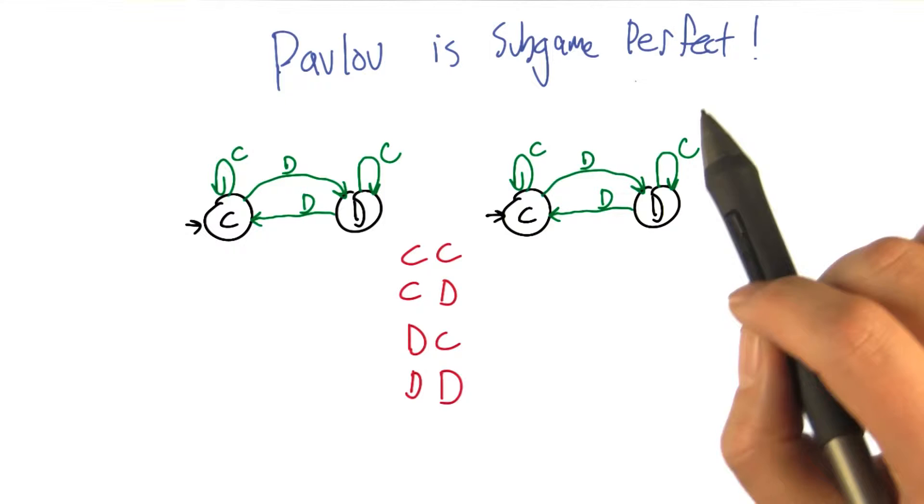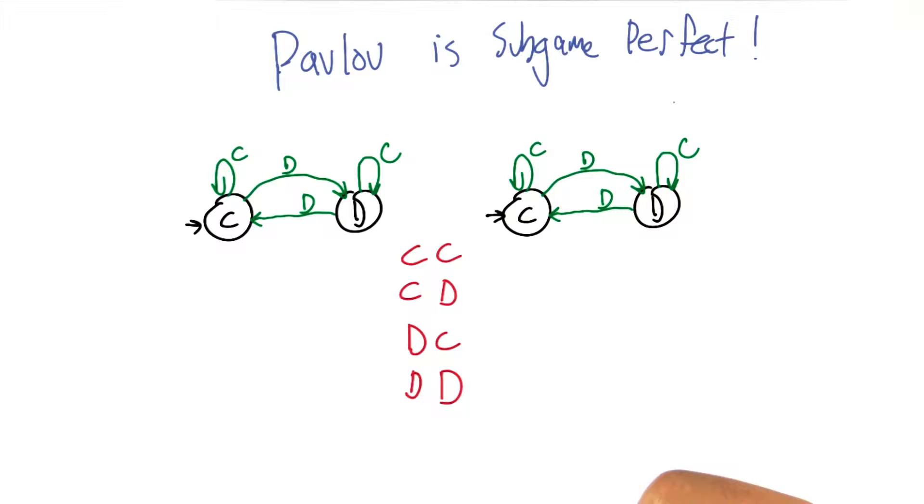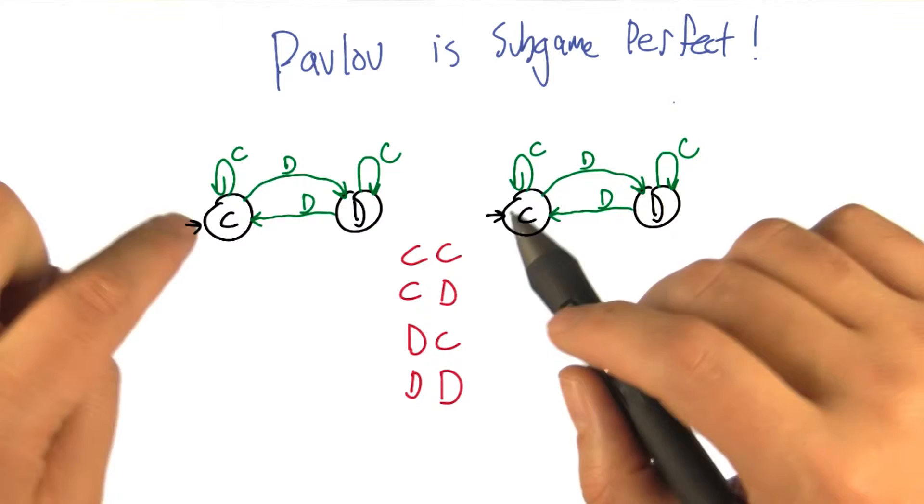So unlike tit for tat, it's actually subgame perfect. So let's take a look at how we could convince ourselves of that. I think the important thing to see is that by feeding these two Pavlov machines different sequences, we can get into any of these four different combinations of states.